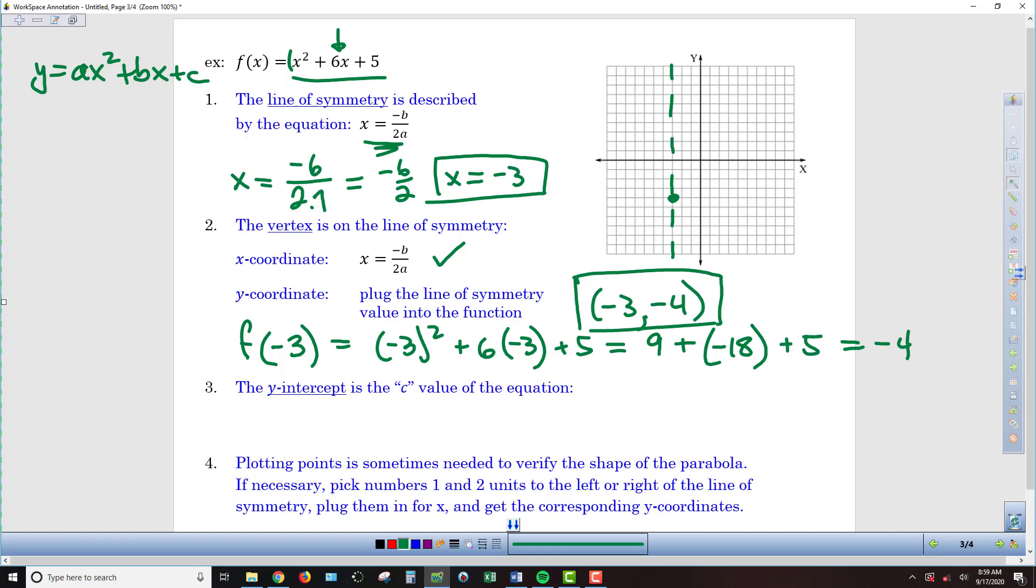Moving forward, we've got the y-intercept. Remember that's the c value of the equation, which is the number being added or subtracted at the back end that does not have an x attached to it. That is 5 in this case, so our y-intercept is 5.